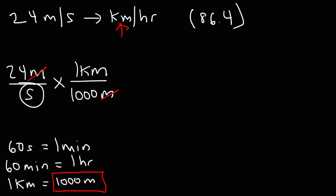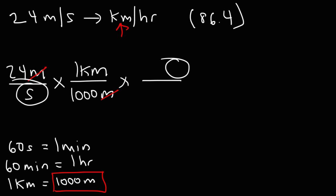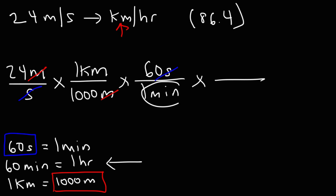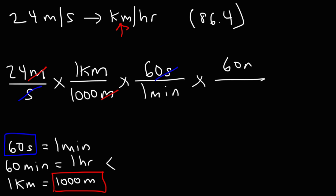Now let's change seconds into minutes. Because we have seconds on the bottom, we put seconds on the top of the next fraction: 60 seconds equals 1 minute, so we can cross out the unit seconds. For the last fraction, we convert minutes into hours. Since we have minutes on the bottom, we put 60 minutes on the top and 1 hour on the bottom.